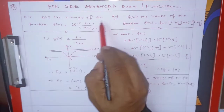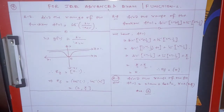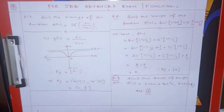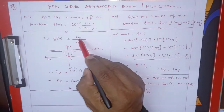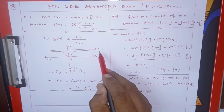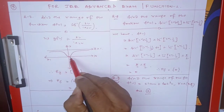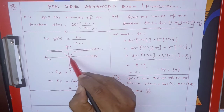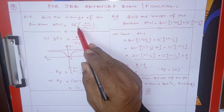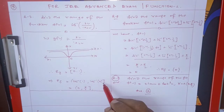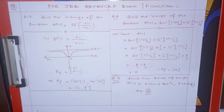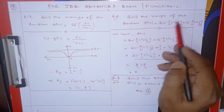Find the range of f(x) = cos⁻¹(g(x)). Consider g(x) = x²/(x²+1). Dividing numerator and denominator by x², as x → ∞ the function approaches 1 — giving a horizontal asymptote at y = 1. At x = 0, g(0) = 0. So the range of g(x) is [0, 1). Since cos⁻¹ is a decreasing function, the range of f(x) is (0, π/2].